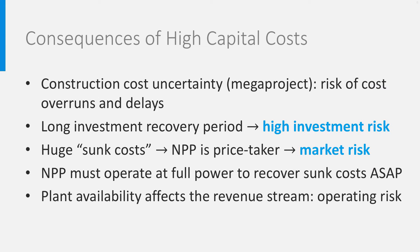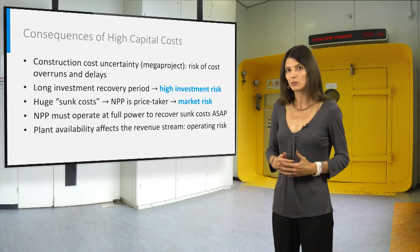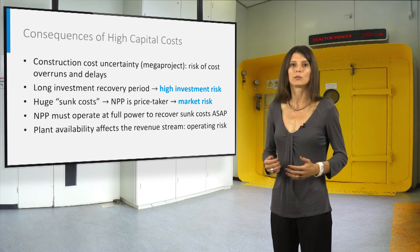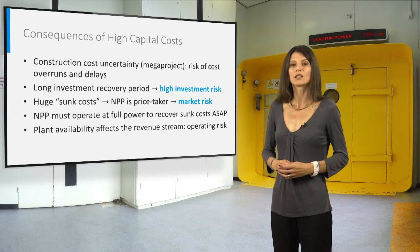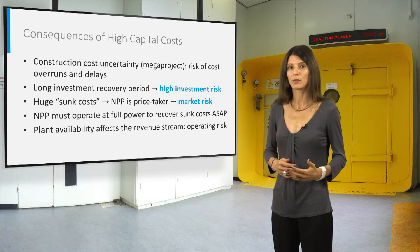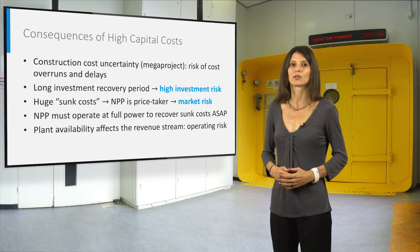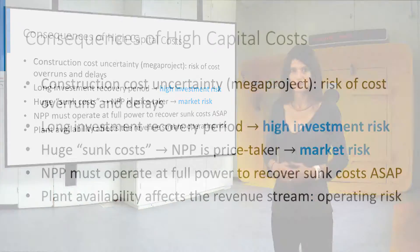Construction costs are sunk costs for investors and have to be recovered by means of the sale of the electricity produced. Any factor that may compromise the revenue stream is a risk factor — for example, plant availability, market price volatility, electricity demand, and so on. The revenue stream has to be maximized, and this pushes towards the maximization of the capacity factor. This is why nuclear power plants are said to be price takers.